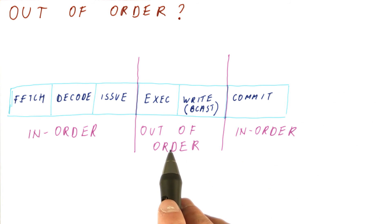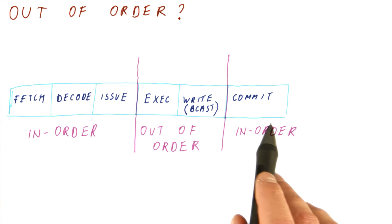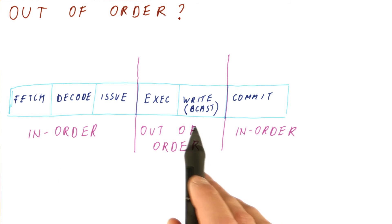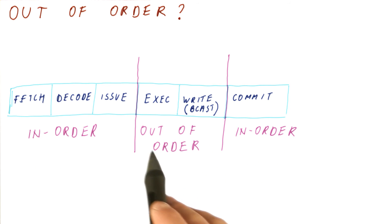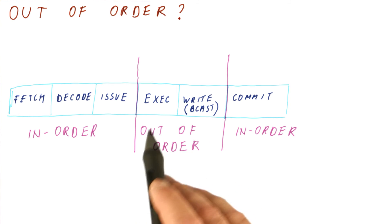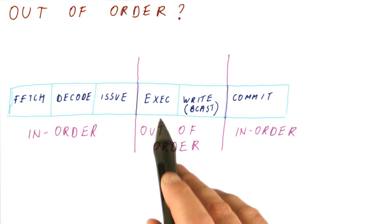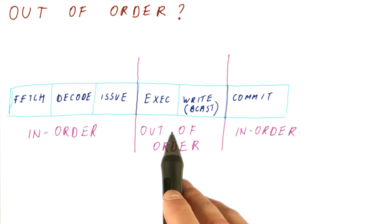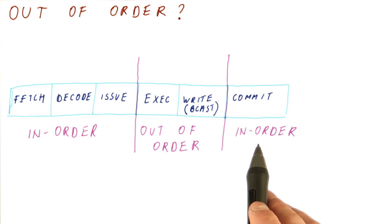So when we have an out-of-order processor, it really is doing many stages in order, and only the execution and broadcast and things in between are happening out of order. So the dispatching, the execution, the writing of results - everything else is still in order. In contrast, what we would call an in-order processor just does these in order too. But even an out-of-order processor does a lot of things in order.